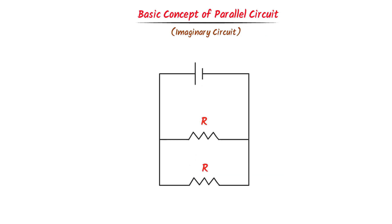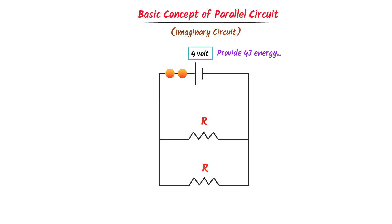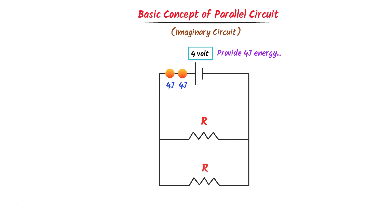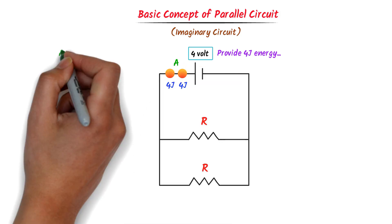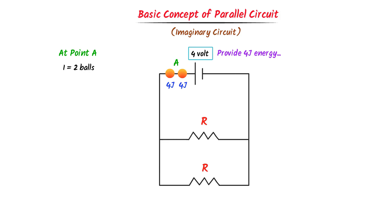Now let me teach you the basic concept of parallel circuit. Consider this imaginary circuit. We call it a parallel circuit because here the resistors are connected in a parallel way. Let the ends of this circuit be connected to a 4-volt battery. Consider these two balls — this 4-volt battery will provide 4 joules of energy to each unit charge, which we call voltage. Battery will provide 4 joules of energy to each ball. Let this be point A. We say that at point A, the current is two units or two balls, and the voltage is 4 joules per ball.